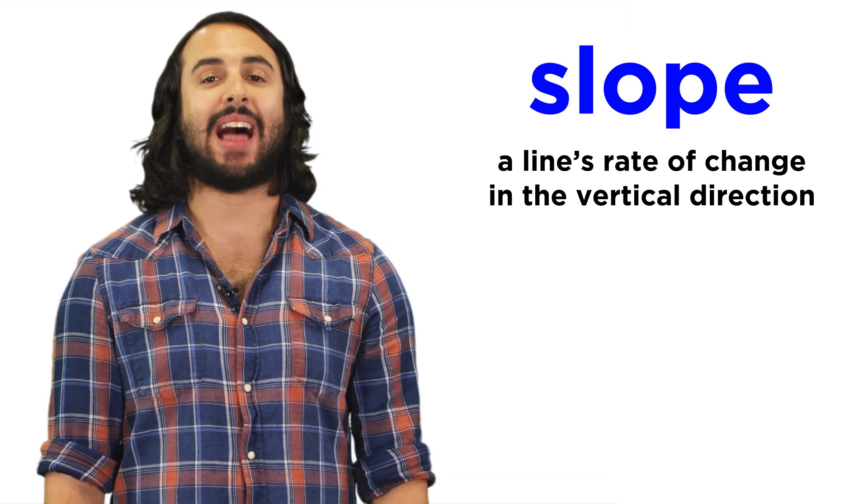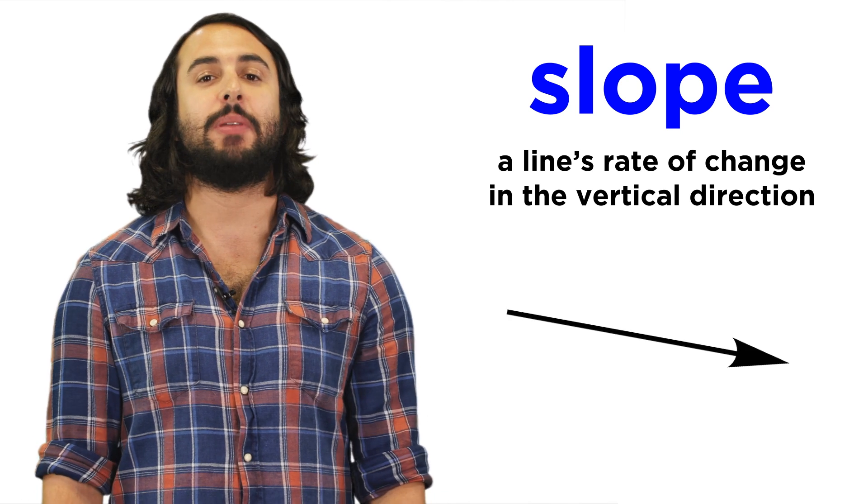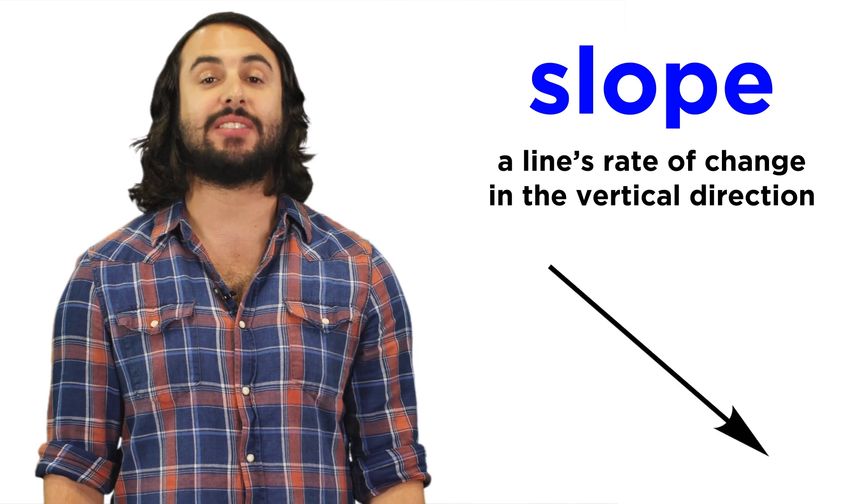In math, when we use the word slope, it doesn't mean we are going to hit the slopes, although there is some similarity between the downward slope of a mountain and the meaning of this word in math. It means a line's rate of change in the vertical direction, which can be shallow or steep, just like a mountain.